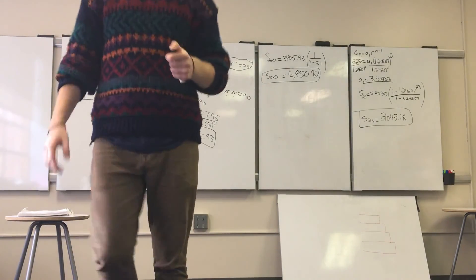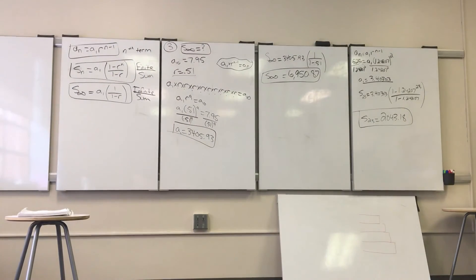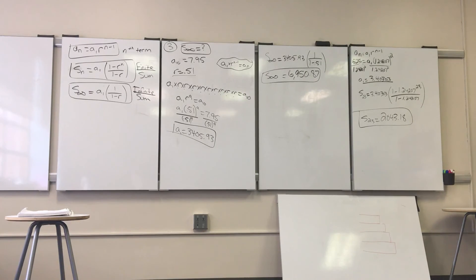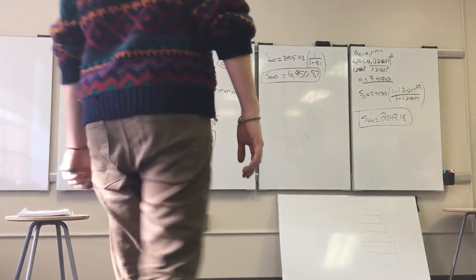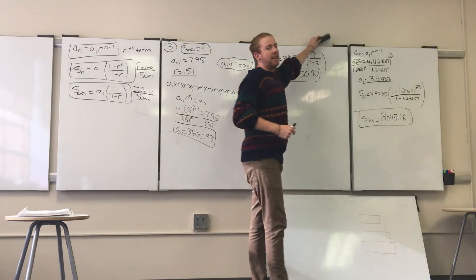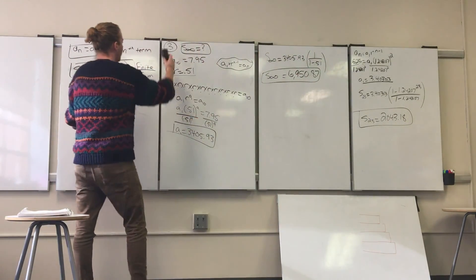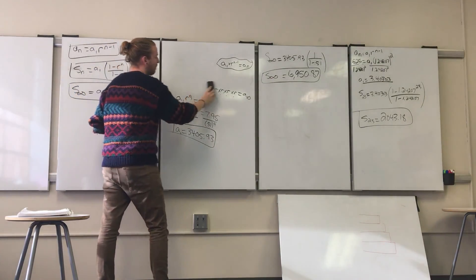We have three more to go through. The fourth problem asks us to find the nine-year economic impact of a $1.9 million investment if 14% of the money from one year gets recycled back into the community the following year. Now we're dealing with economic impact, which is a real-life application of the problems we've been doing.